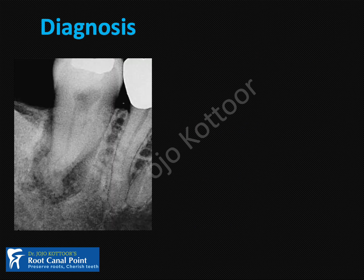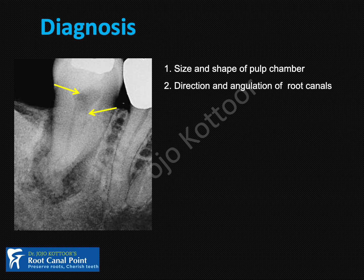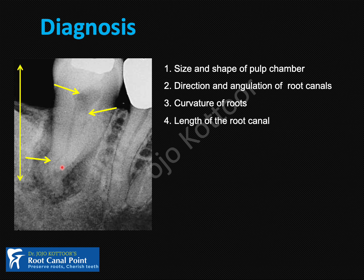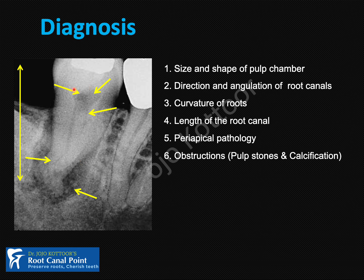The preoperative radiograph is very important, especially in endodontics. It helps identify: (1) the size and shape of the pulp chamber; (2) the direction and angulation of root canals; (3) the curvature — specifically where curvature starts and the degree of curvature; (4) the length of the root canal; (5) periapical pathology — your treatment plan, whether single or multi-visit or requiring periodontal opinion, is based on bone loss; and (6) obstructions within the pulp chamber or root canal, which are also of clinical significance.